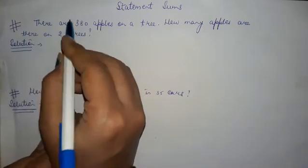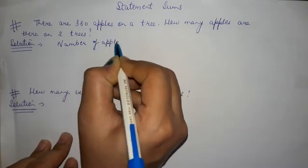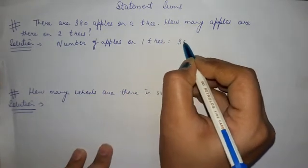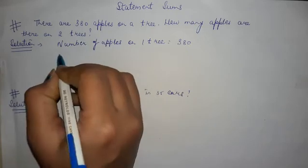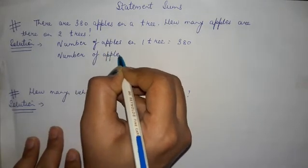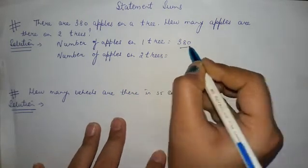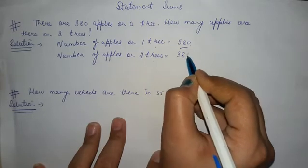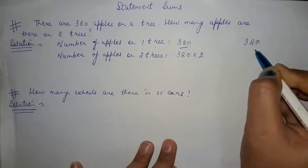we will be writing here number of apples on one tree equals to 380. What we have to find? We have to find number of apples on two trees. So here we will write number of apples on two trees equals to 380. You have to multiply 2 with 1 tree and 380 apples. So on two trees will be 380 multiply by 2. So multiply 380 with 2.